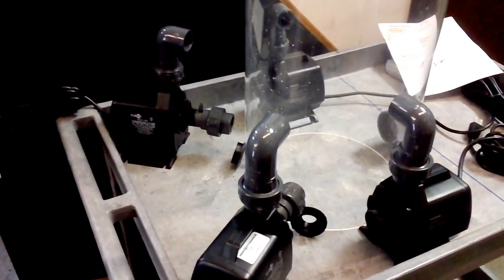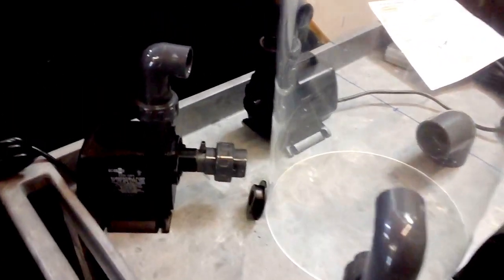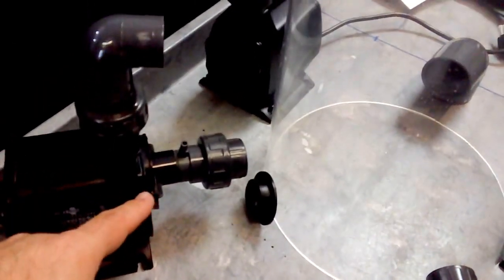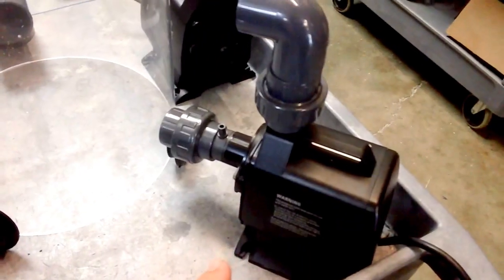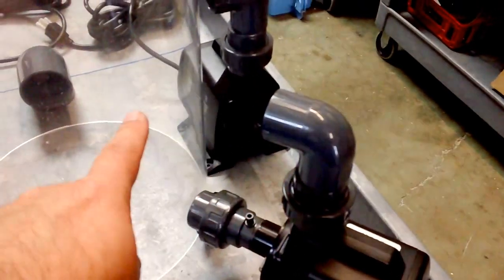The INS1000 is a unique beast for an in-sump skimmer because it has actually two recirculating pumps. This one here and this one here, which pull water from the body and then recirculate back in.